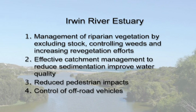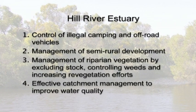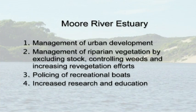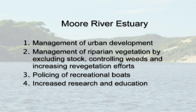Reducing pedestrian impacts and controlling off-road vehicles were also included as management concerns for the Irwin River estuary. The Hill River estuary is the least urbanised of these estuaries, and as such the community showed concern regarding illegal camping and threats from the use of off-road vehicles and increased semi-rural development around the estuary. Managing riparian vegetation and improving water quality through effective catchment management were also considered important. Finally, as Perth suburbs continue to extend northwards along the coast, residents living around the Moore River estuary ranked urban development uppermost, with managing riparian vegetation ranked second, followed by policing of recreational boat activity. Increased research and education was also included in the list of management priorities.